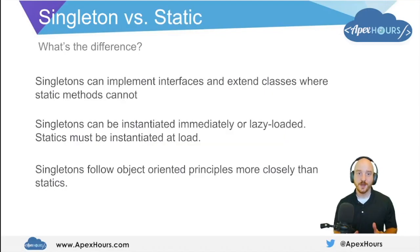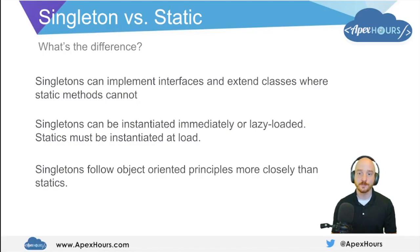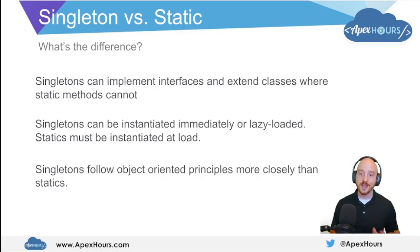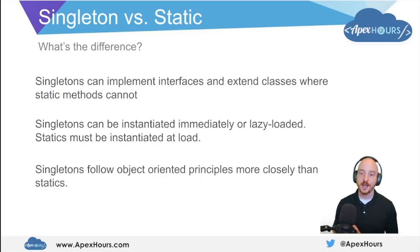So — the singleton pattern versus a static instance. Why would you choose one versus the other? They seem very similar at the surface level, but there are some key foundational differences that might help you make your decision. The main difference is that singletons can implement interfaces and extend classes, where static variables and static methods cannot be used in such a fashion. Also, singletons can be lazily loaded or eagerly instantiated, whereas a statically defined variable must be instantiated at class load.